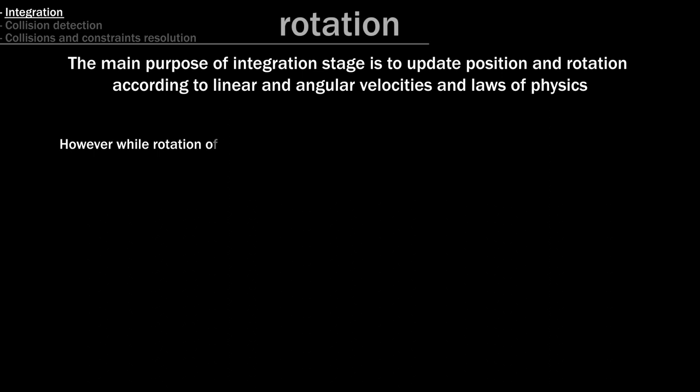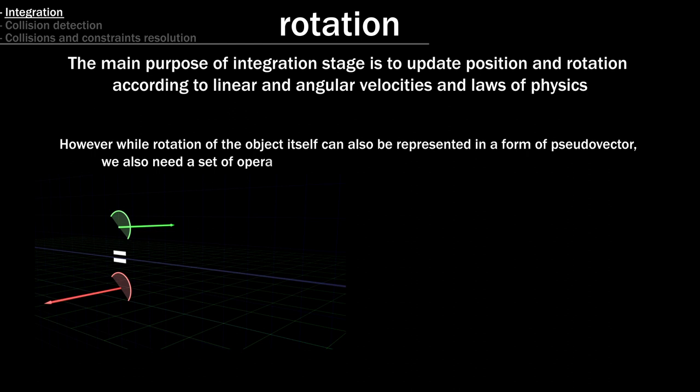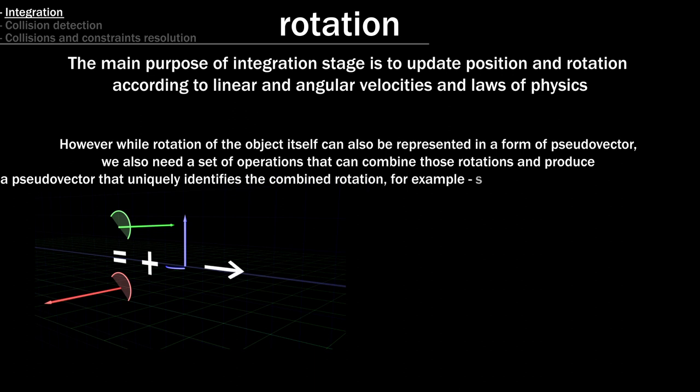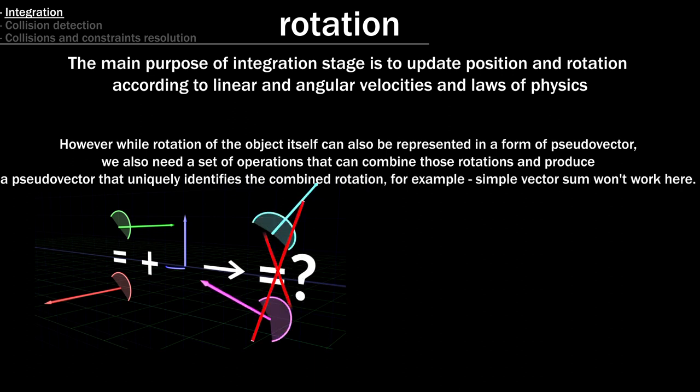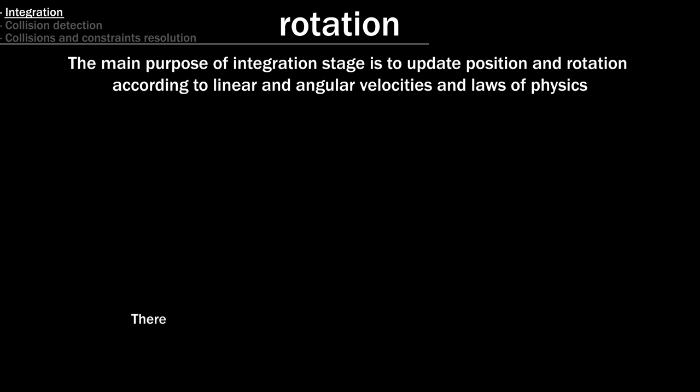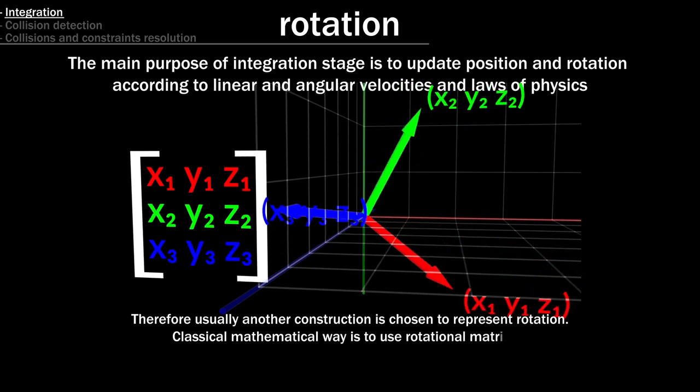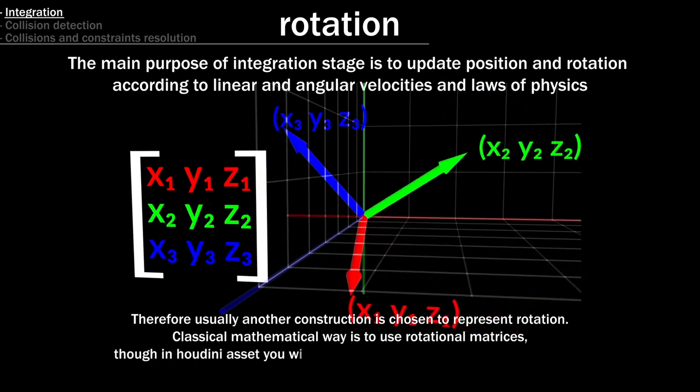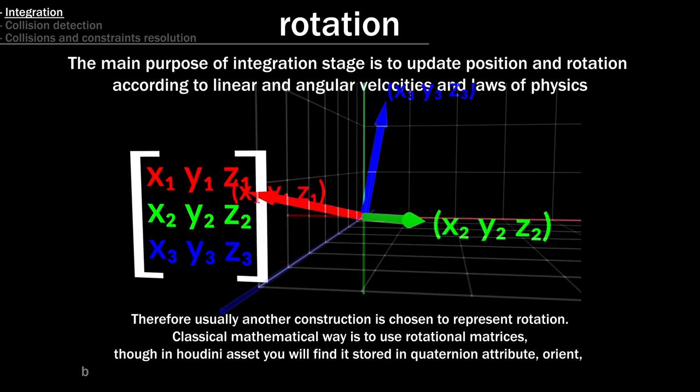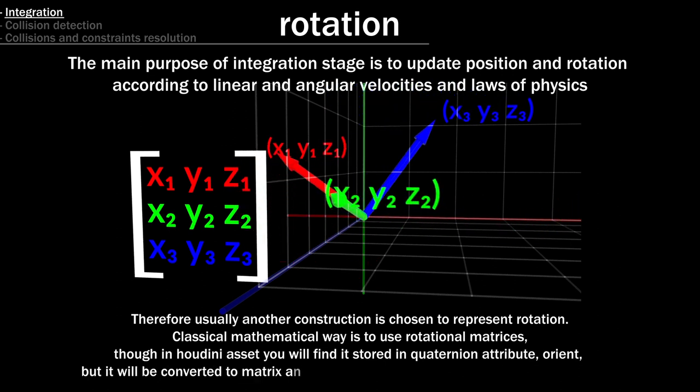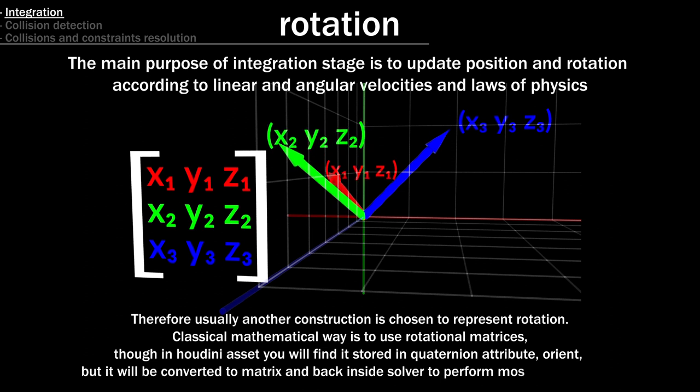However while rotation of the object itself can also be represented in a form of pseudo-vector, we also need a set of operations that can combine those rotations and produce a pseudo-vector that uniquely identifies the combined rotation, simple vector sum won't work here. Therefore usually another construction is chosen to represent rotation. Classical mathematical way is to use rotational matrices, though in Houdini asset you will find it stored in quaternion attribute, orient, but it will be converted to matrix and back inside solver to perform most of operations.